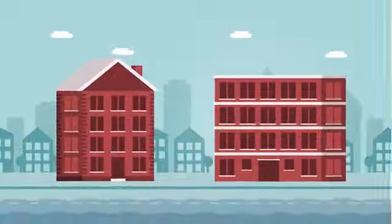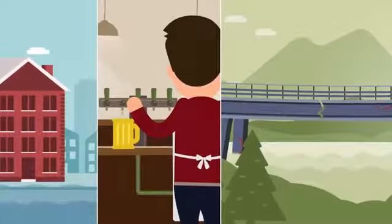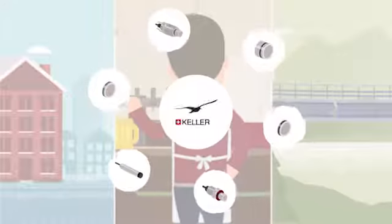What do flooded roads, a beer shortage, and an impassable bridge have in common? They're all missing a pressure sensor from Keller.